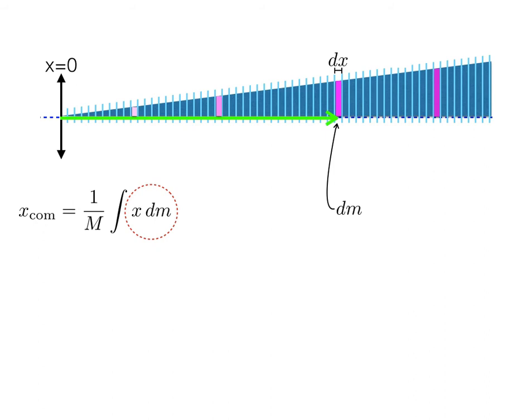So, what fraction of the total mass is contained in a single dm? Well, assuming that the density of the triangle is uniform, the ratio of the triangle's mass to its area should be equal to the ratio of dm to dA. Rearranging that equation, we have dm is equal to mass over area times dA.